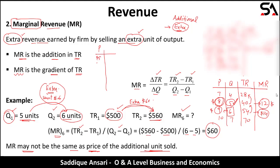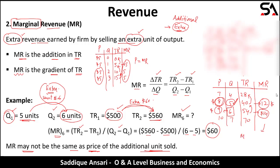However, marginal revenue may be equal to price if price is constant. For example, if price is constant at $5 and quantity is 0, 1, 2, 3, total revenue is 0, 5, 10, 15. Marginal revenue is 5 − 0 = 5, 10 − 5 = 5, 15 − 10 = 5. So in this case marginal revenue and price are equal. That is why I said marginal revenue may or may not be the same as price.